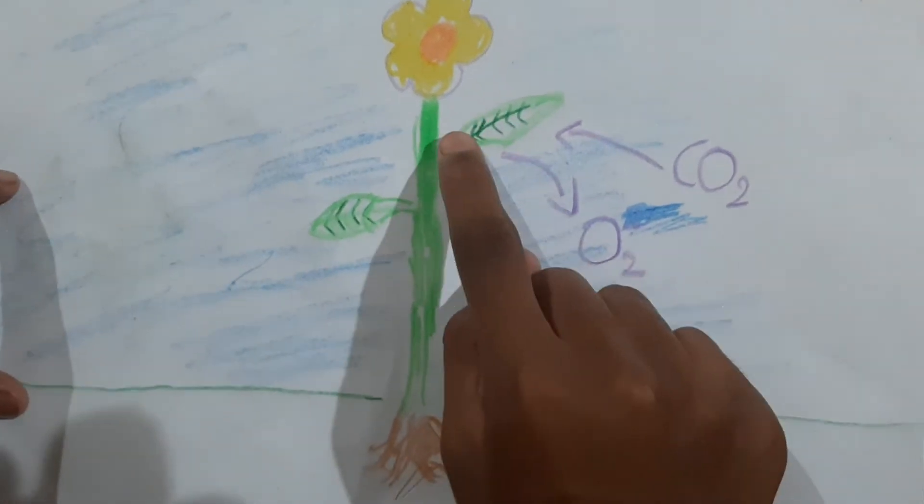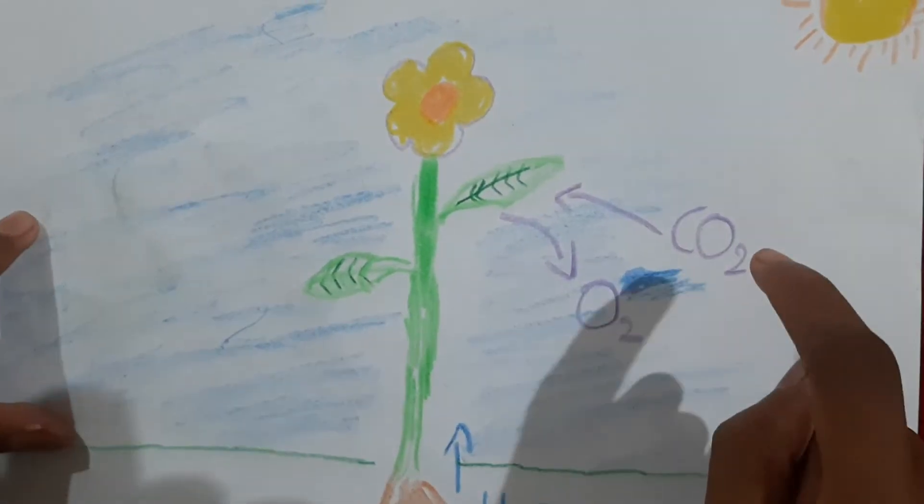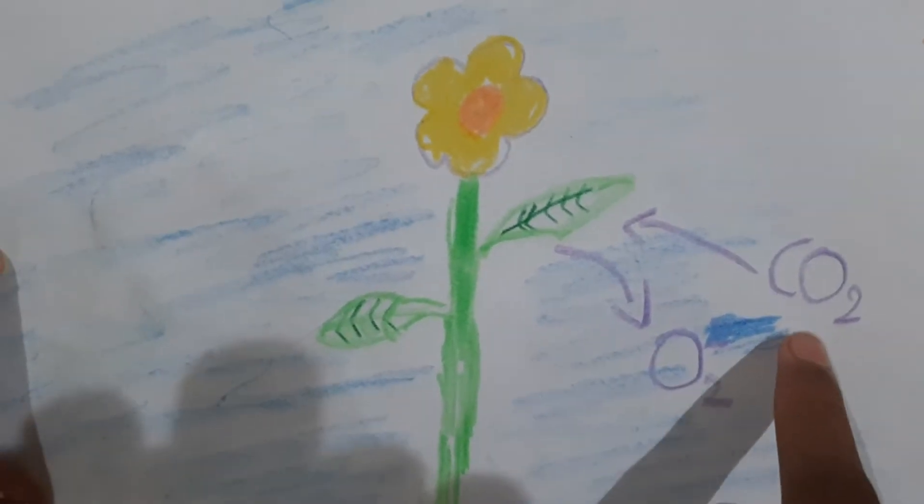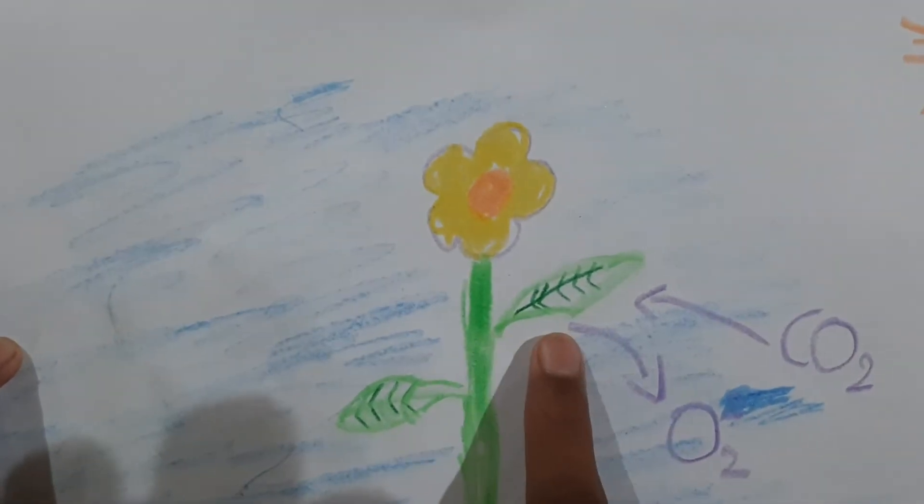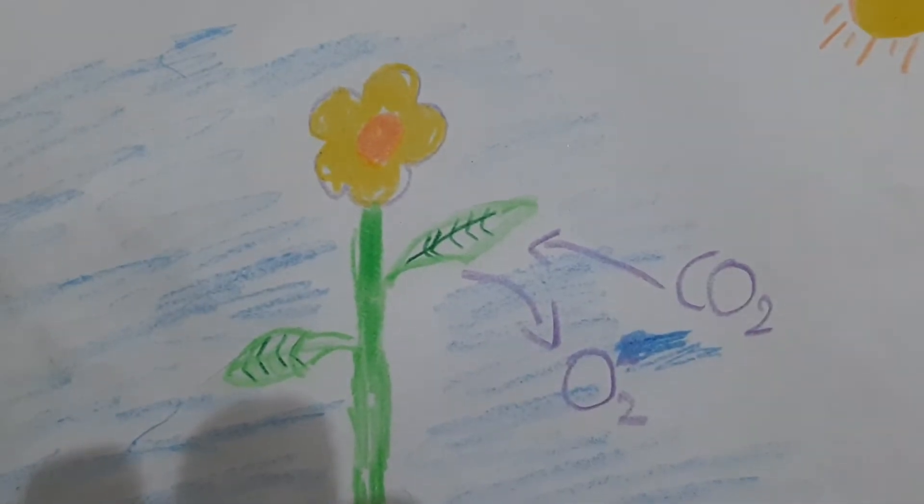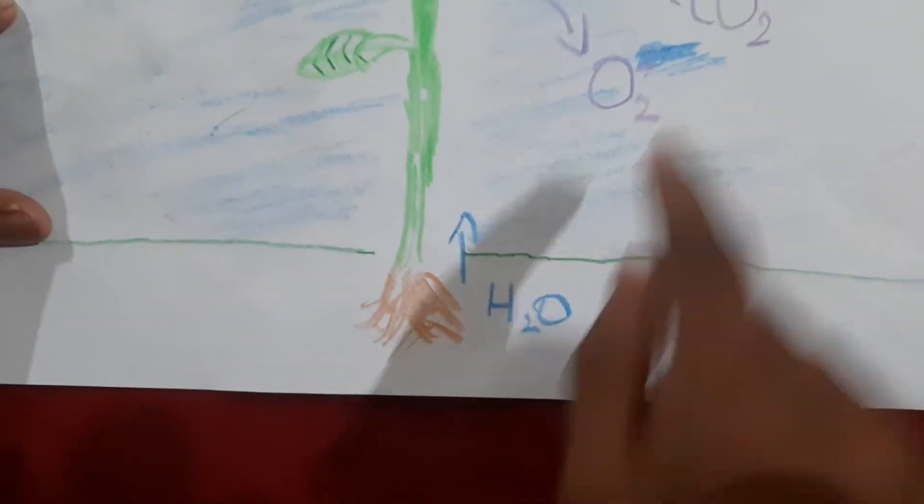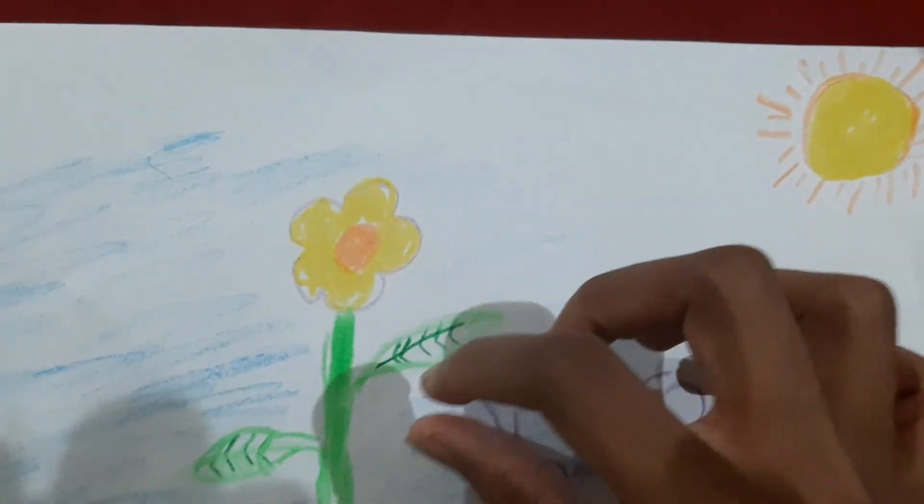and then reach the leaves where it will be used with carbon dioxide taken from the atmosphere to create its food. So it will use carbon dioxide, water from the roots, and sunlight to create its food, and as